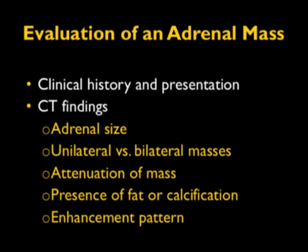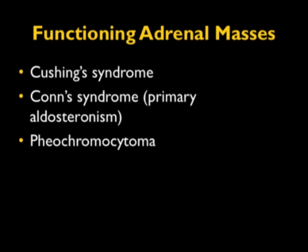Now let's talk about adrenal masses. Most adrenal masses are going to be benign, but clinical history is so important. If a patient is hypertensive with a mass, I'm thinking pheo. If a patient has lung cancer and has a mass, I'm thinking metastasis. If there's no history and it's an incidental finding, I'm thinking adenoma. Things we look at: adrenal size, whether it's unilateral or bilateral, attenuation, fat or calcification content, and enhancement pattern. Cushing's, Conn's syndrome or primary aldosteronism, and pheochromocytomas are three good examples of hyperfunctioning adrenal masses.